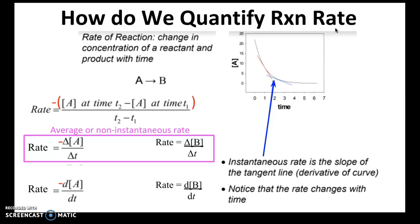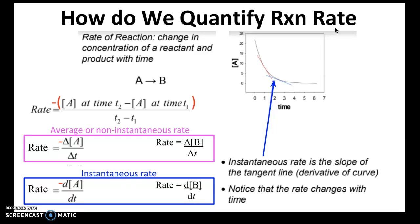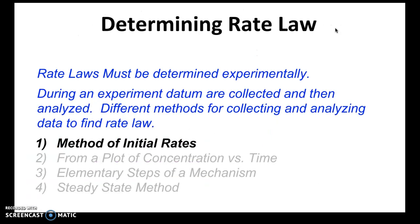The other way we can quantify rate is through an instantaneous rate — that's the rate at a particular time, measured as the derivative of the curve, which can be determined by taking the slope of the line tangent to the curve at that time. Once again, if you are doing this for the reactant's concentration curve, multiply by negative one because concentration of reactant decreases, and you want to keep that rate positive.